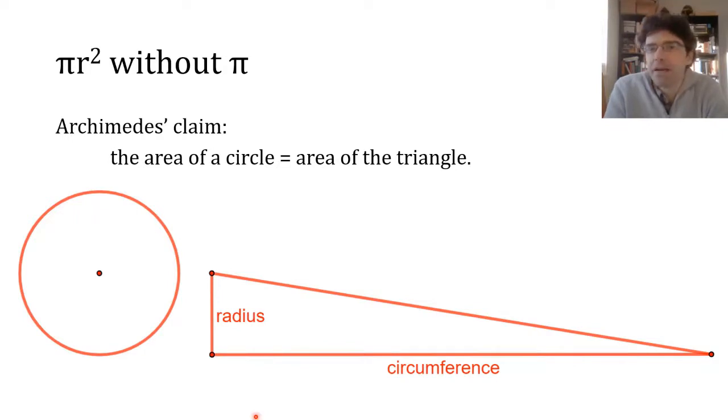So normally today we say that the area of a circle is pi r squared, where r is the radius, but Archimedes didn't actually have that shorthand pi for talking about the ratio between a circle's circumference and its diameter. So he had to express this whole idea a little bit differently, and what he says is that the circle's area is equal to a triangle